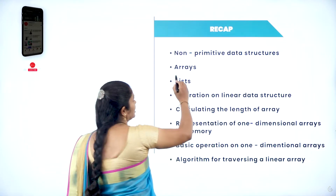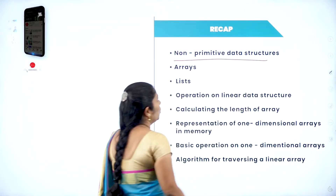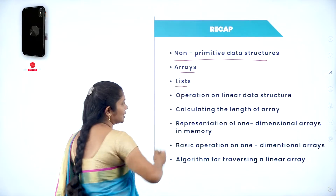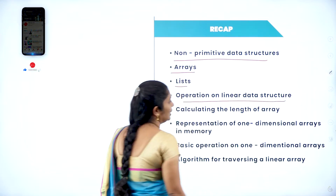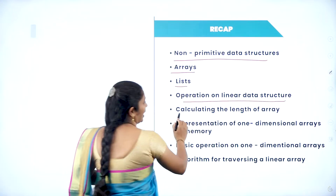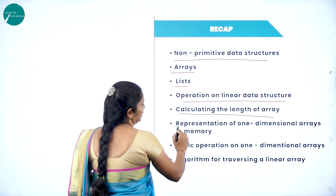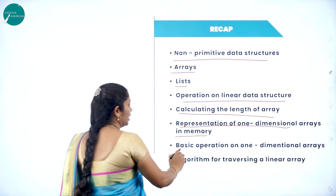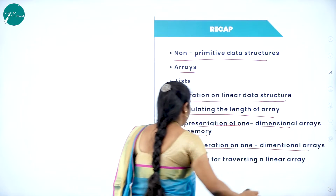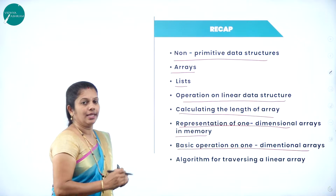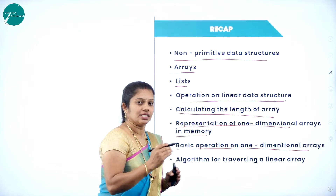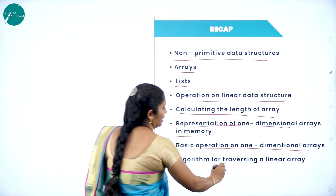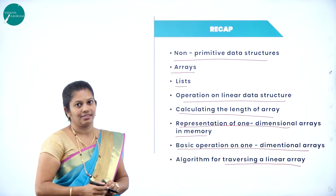In the previous class, you studied regarding non-primitive data structures, arrays, lists, as well as operations on linear data structures — calculating the length of an array, representation of a one-dimensional array in memory, and the basic operations on a one-dimensional array like traversing, insertion, deletion, searching, and sorting. With that, you studied the algorithm for traversing.